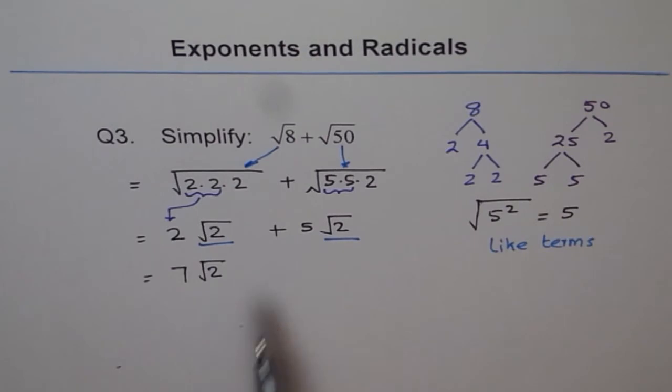So here, we have both of them as like terms with square root 2. So we get 2 plus 5 is 7. Don't add these 2's inside. Think like 2 apples and 5 apples will give you 7 apples. So we cannot have 7 apple apples. So it is 7 square root 2. Thank you.